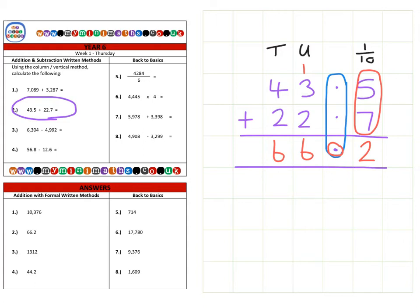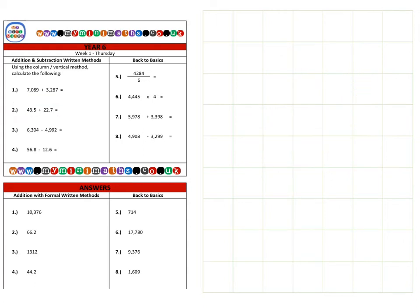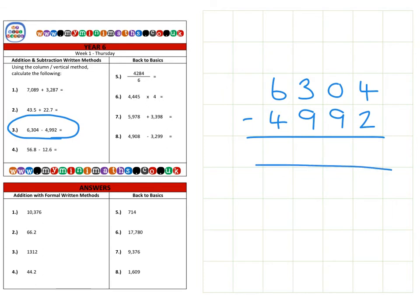Next we're on to question three, which is subtracting a four-digit number from another four-digit number. So that's 6,304, and we're going to subtract 4,992. So first of all if we take our units column, that's four subtract two, which is two.